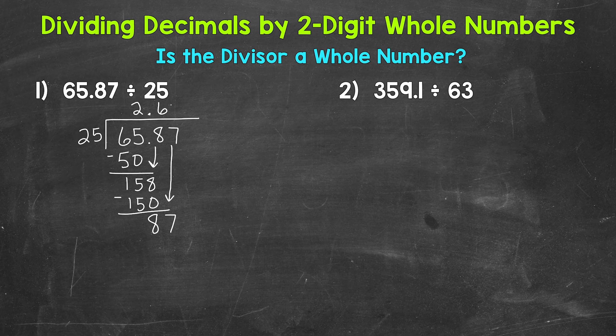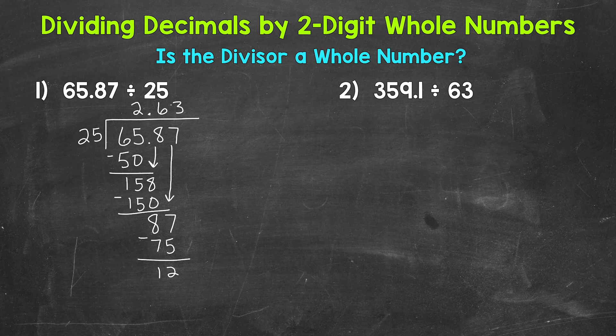Then repeat — divide. 87 divided by 25 — how many whole groups of 25 in 87? 3 — that gets us to 75. Multiply: 3 times 25 is 75. Subtract: 7 minus 5 is 2, 8 minus 7 is 1, so now we have 12. We went all the way over to the furthest place to the right, the hundredths place, but we have a 12 at the end.